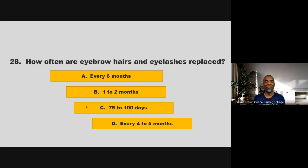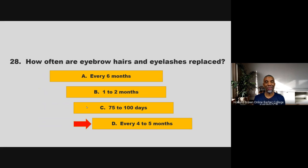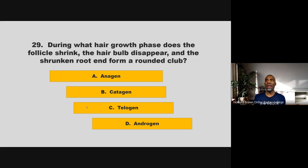How often are eyebrow hairs and eyelashes replaced? Is it every six months, one to two months, 75 to 100 days, or every four to five months? If you chose D, every four to five months, you are correct.